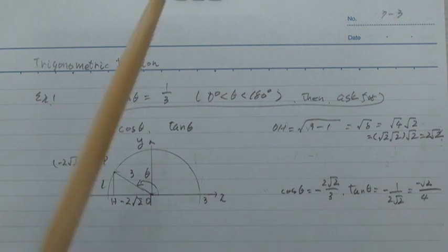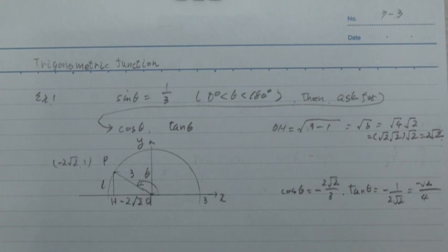And then cos theta equals, by definition, x over r equals. And tan theta equals y over x. And this is.